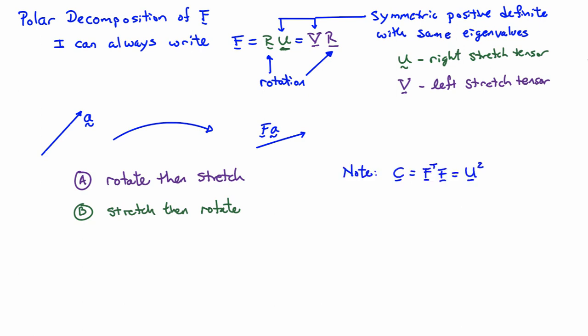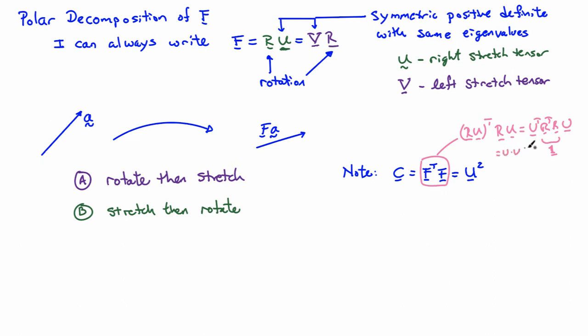One important thing to consider is that all the expressions concerning stretch, strain, or shear strain involve the right Cauchy-Green deformation tensor, defined as F transpose F. If I plug in F = RU, I can write this as (RU) transpose (RU), which equals U transpose R transpose R U. Since R transpose R is the identity, I end up with U transpose U. And since U is symmetric, U transpose equals U, so this gives me U squared.